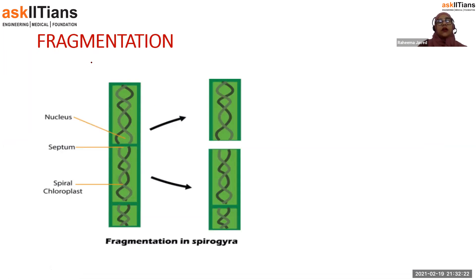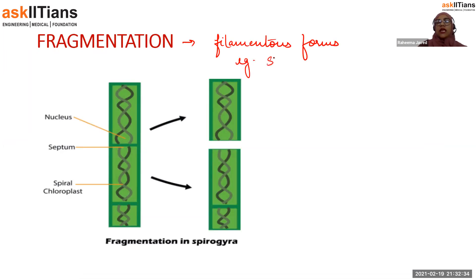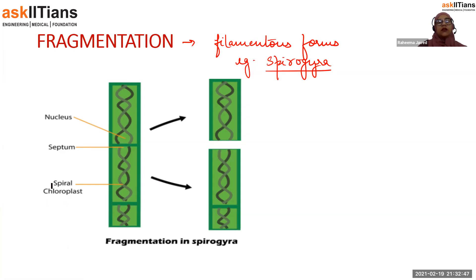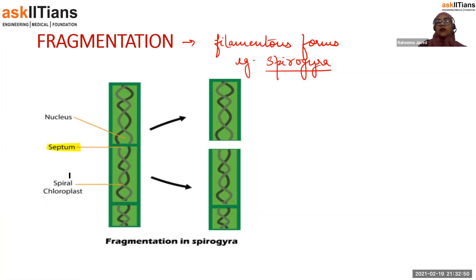Fragmentation only takes place in filamentous forms like algae, and one such example is spirogyra, a green alga. Spirogyra has filaments, and a tiny septum can develop in the filament, dividing it into two. This process is known as fragmentation, and these fragments can develop into new individuals. It is very common only in filamentous forms.